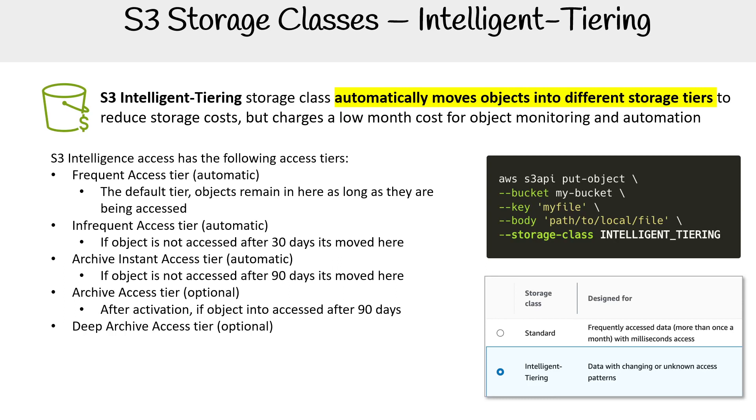You can also turn on or activate the deep archive access tier. After 180 days, objects will move here and you'll keep saving money.